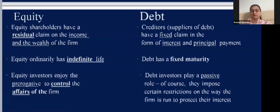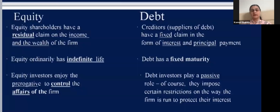Equity is considered the residual income of shareholders — whatever is left goes to them as income and wealth. In debt, lenders are treated as creditors who give money on credit. They have a fixed claim and receive income in the form of interest and principal payments. Equity has an indefinite life — as long as the project runs — while debt has a fixed maturity.